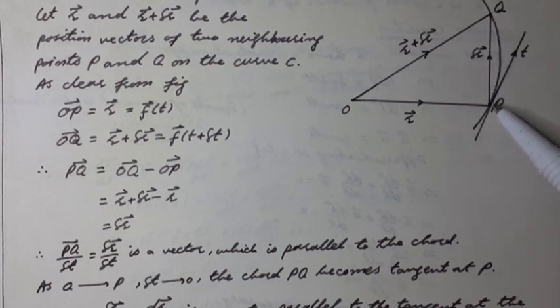As Q tends to P then delta t tends to zero. Note it, the chord PQ becomes tangent at P in this situation.